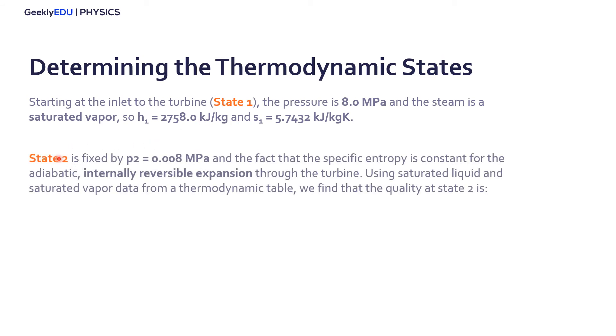Let's go to state number two. There we have the pressure at the inlet of the condenser. We know that is the same as the outlet because the condenser works at constant pressure. And we are considering an internal reversible expansion through the turbine. So the pressure there is 0.008 megapascal. So using the same tables for saturated liquid and saturated vapor, we can find the quality of state two. Remember that state two, when it leaves the turbine, we have a mixture of liquid water and vapor, so we need to find the quality.